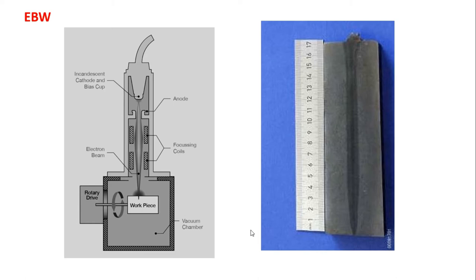Two focusing coils are available, and before those there is an anode — any weak electrons are absorbed by the anode, and the remaining electrons pass through and are focused to the desired focal shape. At the bottom, a rotary driver holds the workpiece, so cylindrical objects can also be welded. X-Y linear axis movement is also possible for lap joints, butt joints, and all joint types. Reactive materials like titanium can be easily handled by EBW because it maintains a vacuum chamber, preventing contamination.